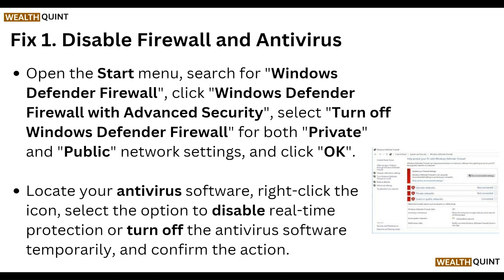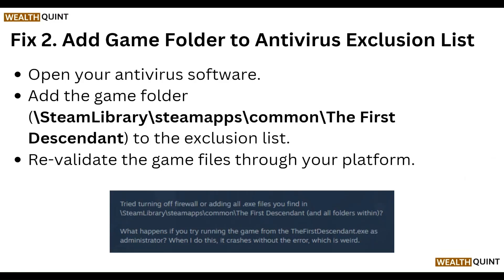Disable it in both the private and public network settings and click OK. Then locate your antivirus software, right-click the icon, and select the option to disable real-time protection to turn off the antivirus software temporarily, then confirm the action.